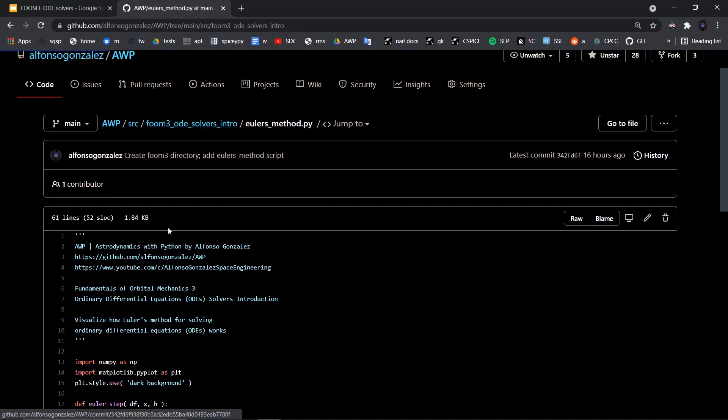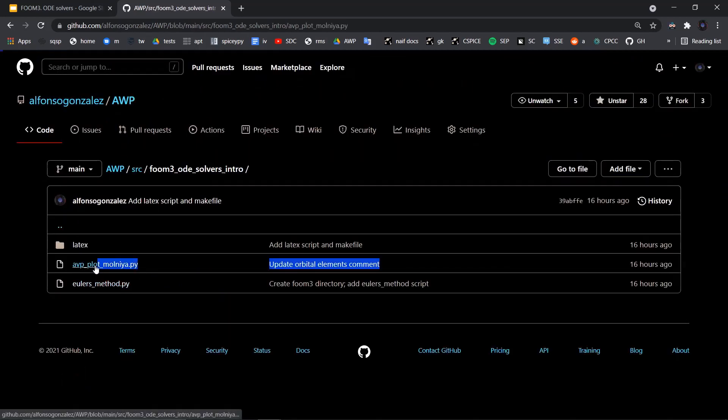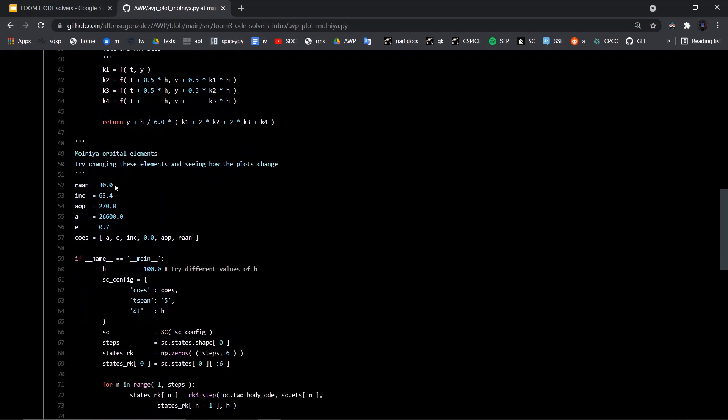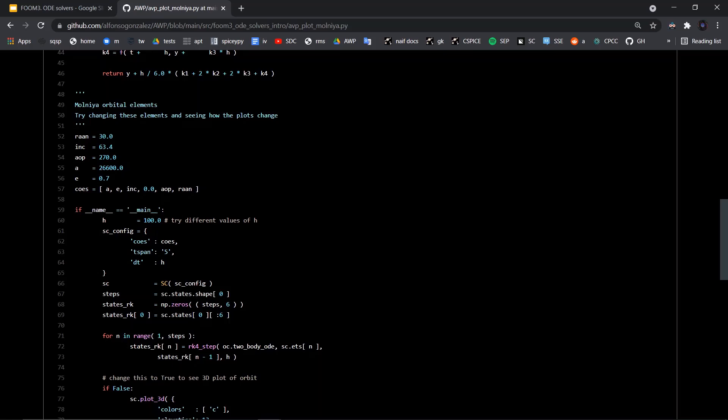And same thing with the Molniya orbit plot with the acceleration and velocity. So you can just go in here and see everything that I did for that. And these Molniya orbital elements, you can try changing them out. So that was just Molniya, but you can try a bunch of different orbital elements and see how the plots change, as well as trying different values for h.